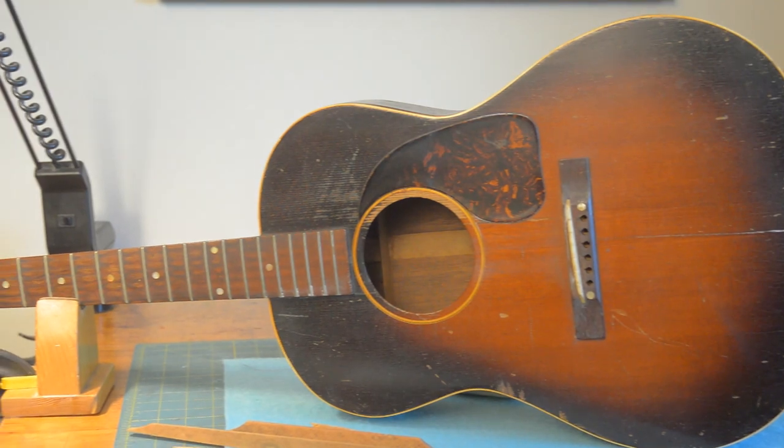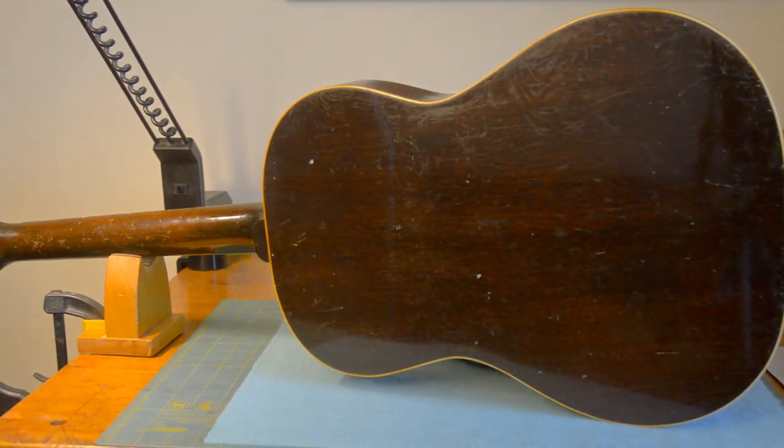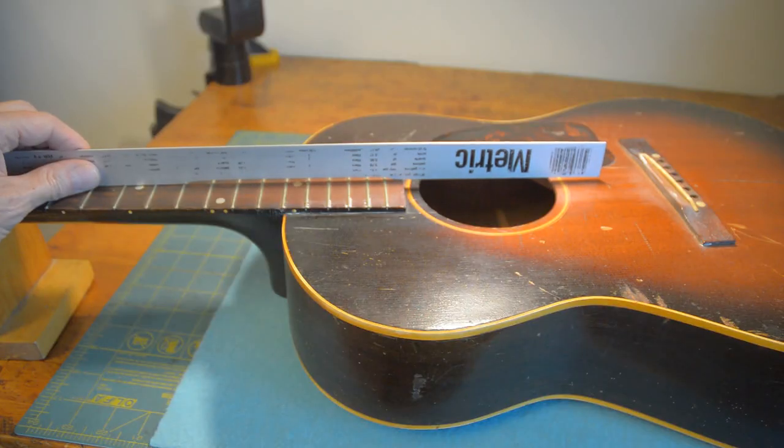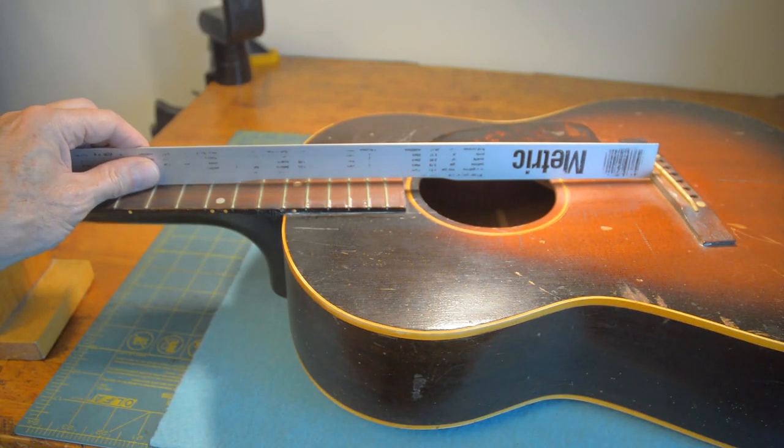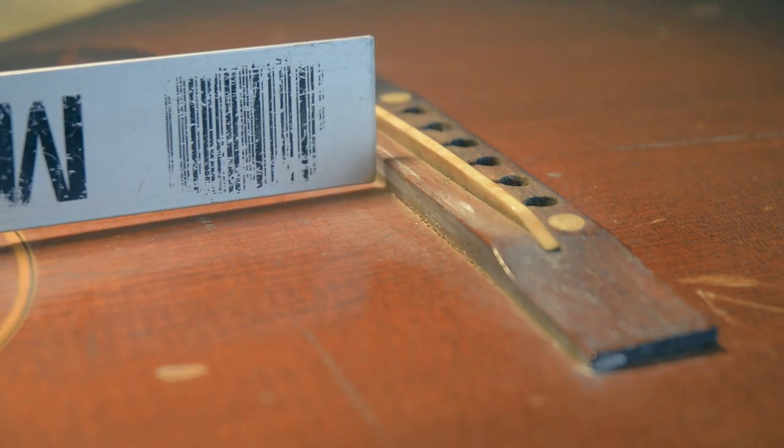This is a Gibson 1947 LG II acoustic guitar that doesn't look too bad, but it needs a lot of work. The straight edge should land well above the bridge, so a neck reset is going to be necessary.